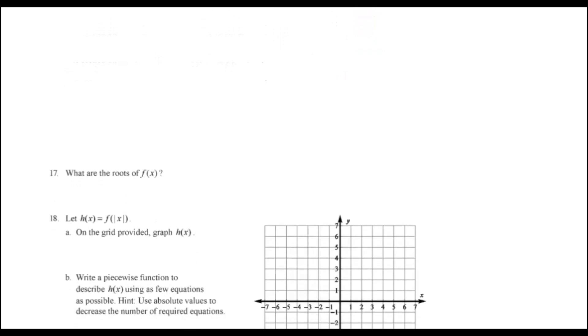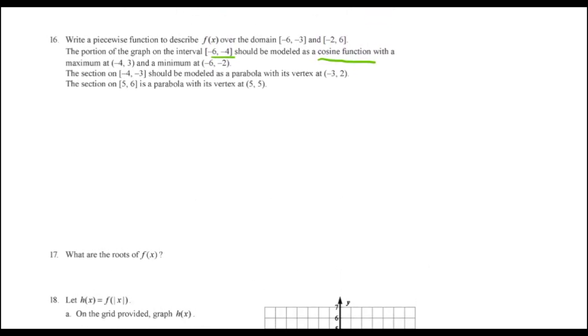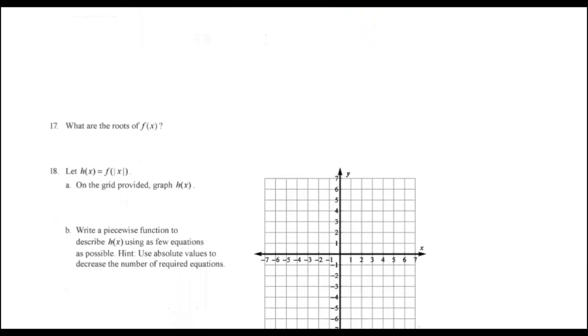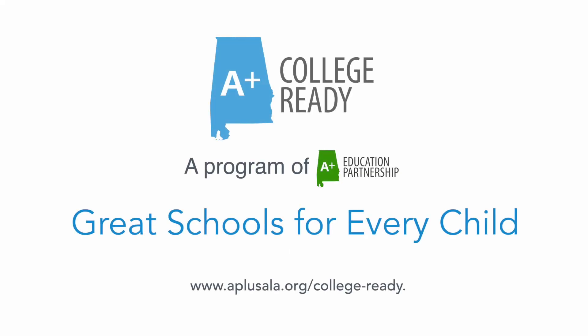And so number 16 can get pretty tough. Then on number 17, it asks for the roots of the function, which means the equations have to be correct in number 16 in order to do number 17 correctly. Now, even though they may get all the equations for number 16 correct, you might still want to let them use their calculator to help find some of the roots for some of those functions that they come up with in 16. And then number 18 is they perform the transformation with the absolute value on the inside of the function. And they need to know what transformation that does to the graph in order to be able to graph the function and look at part B. They have them come up with a new set of equations for this piecewise function.